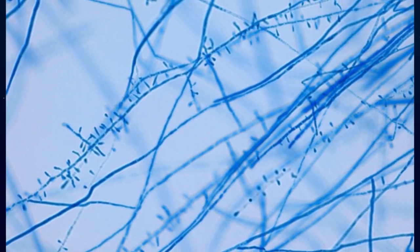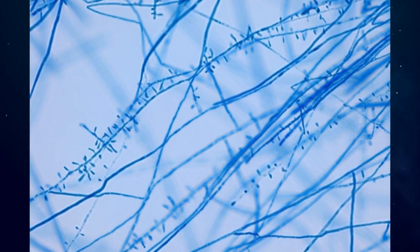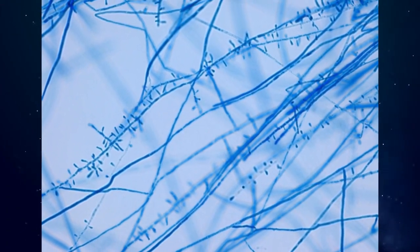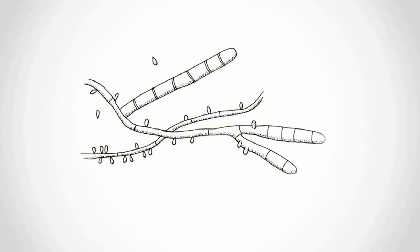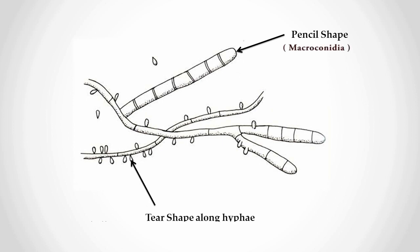Microscopically, there are septate hyaline hyphae with lateral tear-shaped microconidia. These are arranged singly along the sides of the hyphae.